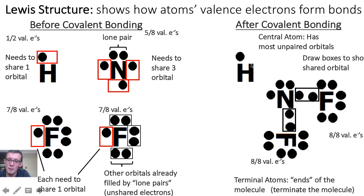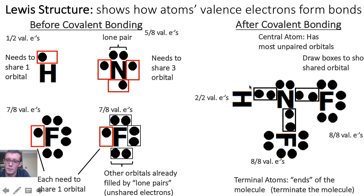And we'll do the same thing with hydrogen, to give hydrogen the two valence electrons that it needs to fill up its outer shell. Now after we have formed all three of these covalent bonds and shared all three of these valence orbitals, nitrogen now has two, four, six, eight valence electrons in its valence shell and we have a completely stable molecule.